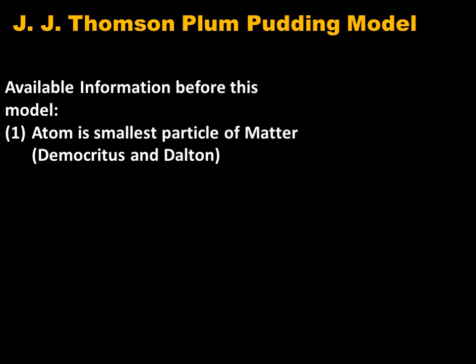The available information before this model was that the atom is the smallest particle of matter. This was the idea of Democritus and Dalton. According to Democritus, if we cut a piece of matter into smaller and smaller pieces, a point would be reached where the matter could not be cut into still smaller pieces. He named these uncuttable pieces of matter as atoms. Dalton also followed Democritus's idea and said that all matter consists of atoms and atoms cannot be created or destroyed.